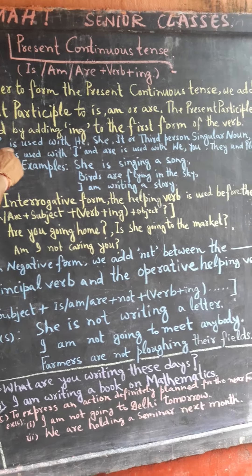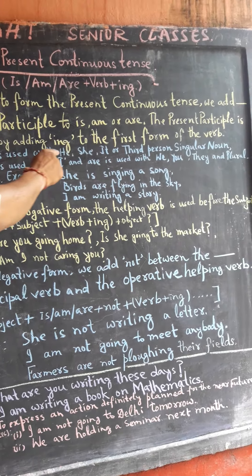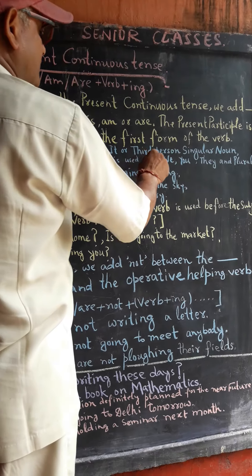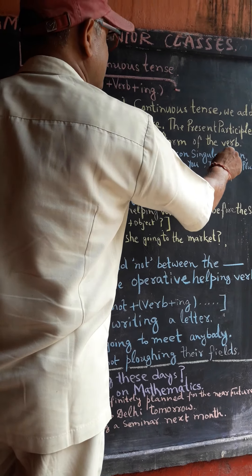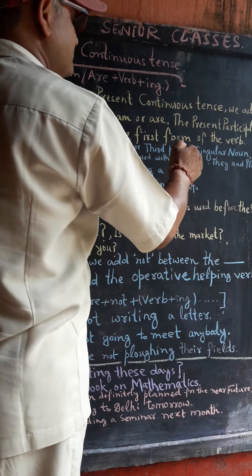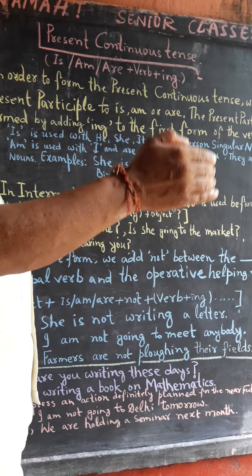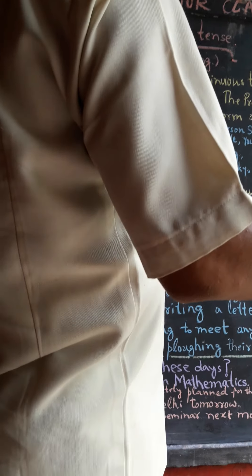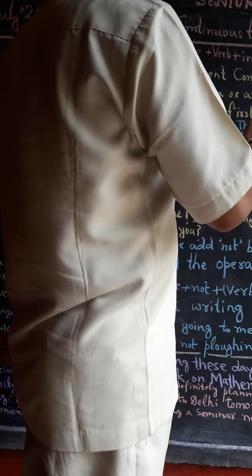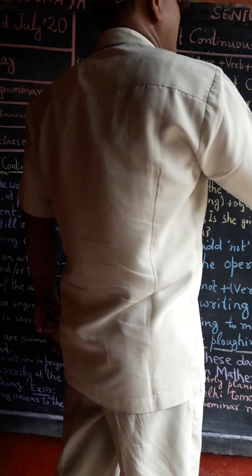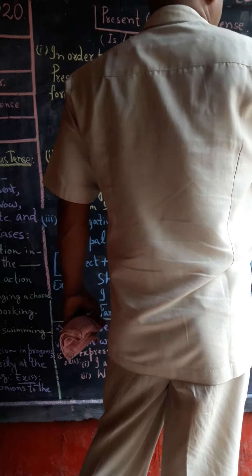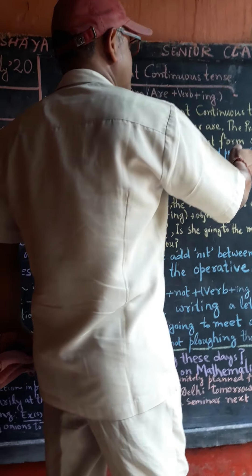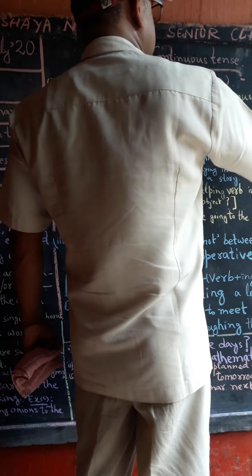'Is' is used with he, she, it, or third person singular number. Third person singular number means: Ram, Siam, Mohan, Rajiv, Abhinav, Anubhav, etc.